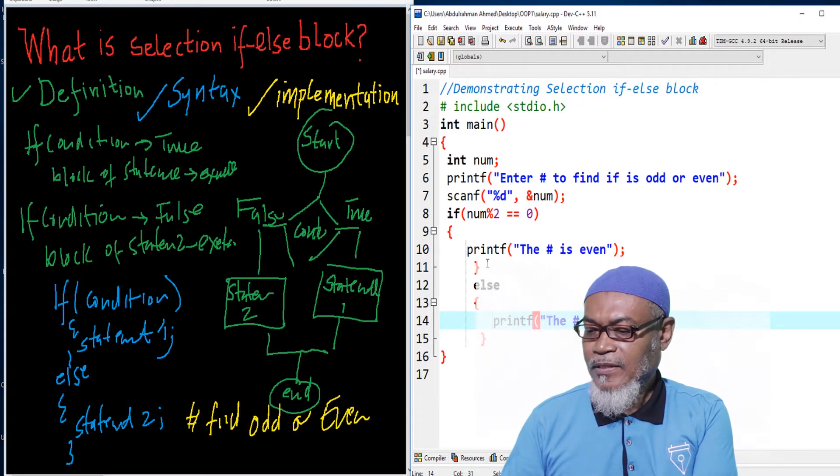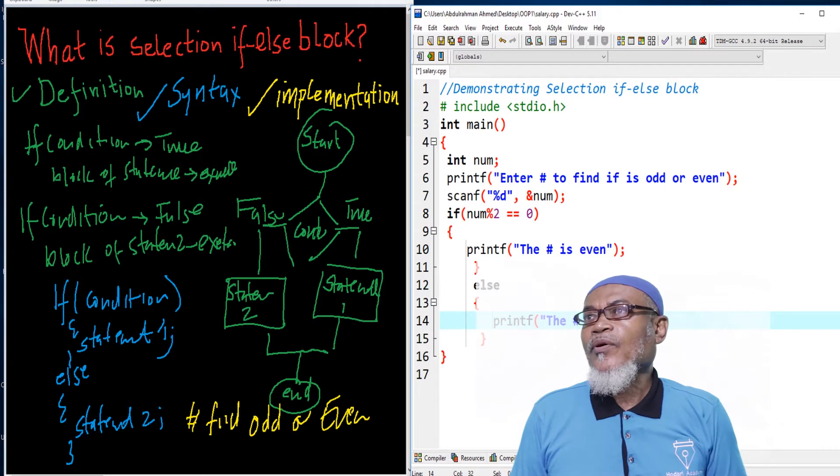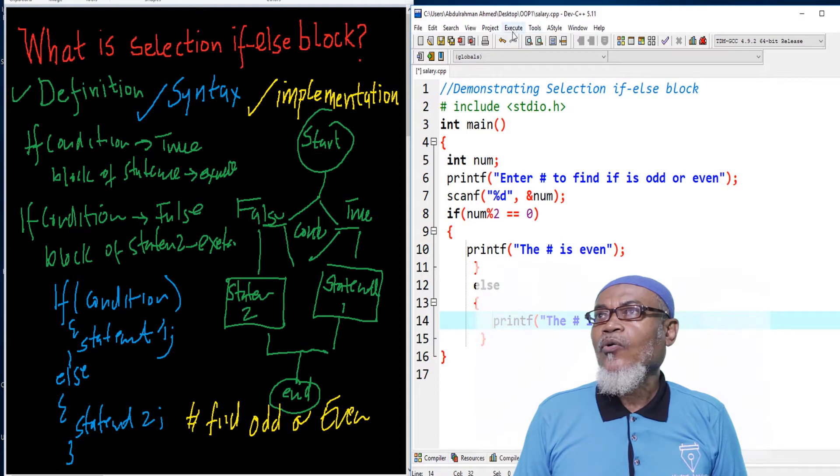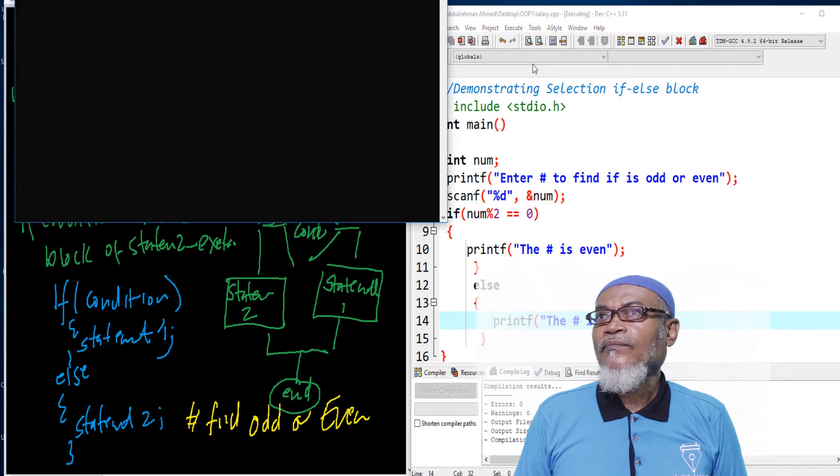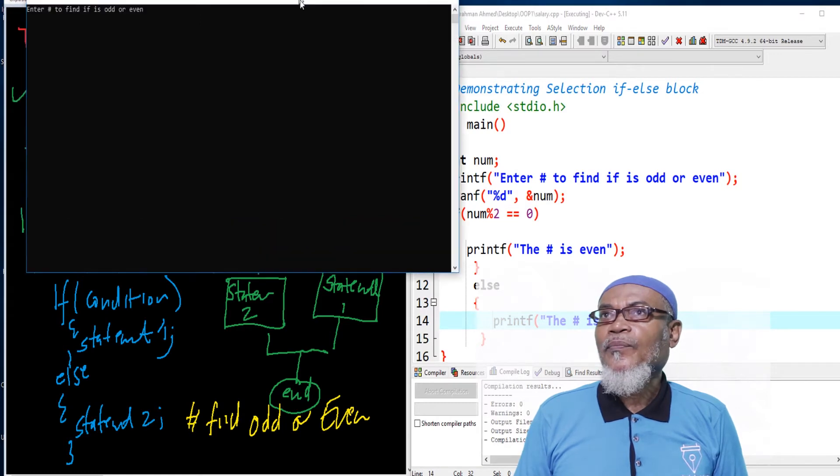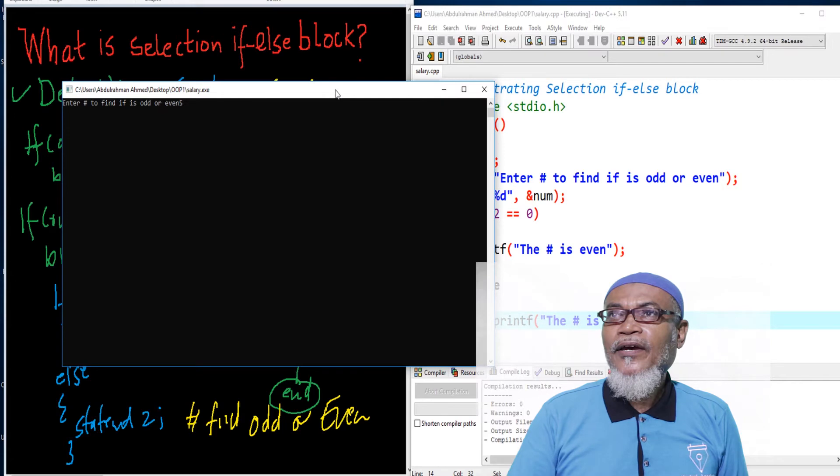That will be our syntax. When we run this program, it should tell us whether the number is even or odd. Let's run this program. We've run it and are prompted: enter a number to find out if it is odd or even. If you enter 5, it tells us the number is odd.